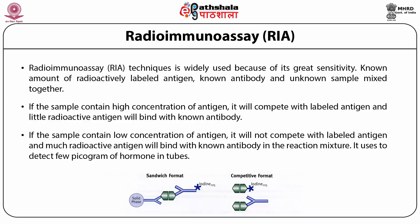Another immunoassay is the radioimmunoassay, which was the first discovered. There is no fundamental difference between enzyme immunoassay and radioimmunoassay, except that instead of the enzyme, the antigen or antibody is labeled with a radioactive material. Again, a competition between the unknown sample and the antigen-antibody complex is made, and the amount of label coming out is directly proportional to the amount of antigen or antibody present in the serum. Even though this method was initially very powerful, because of the hazardous nature of radioactivity it has been replaced by enzyme immunoassay.